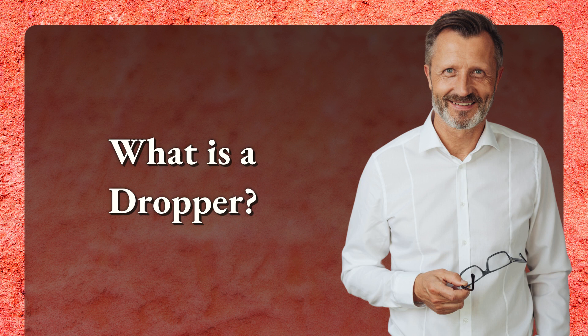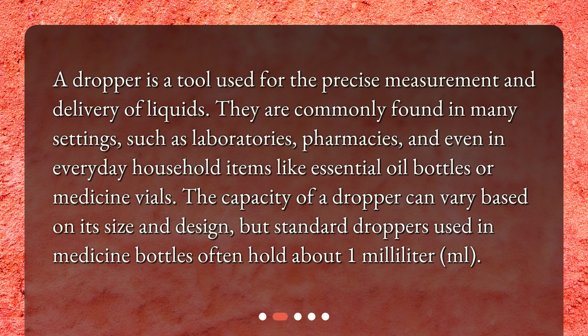What is a dropper? A dropper is a tool used for the precise measurement and delivery of liquids. They are commonly found in many settings, such as laboratories, pharmacies, and even in everyday household items like essential oil bottles or medicine vials. The capacity of a dropper can vary based on its size and design, but standard droppers used in medicine bottles often hold about 1 milliliter (ml).